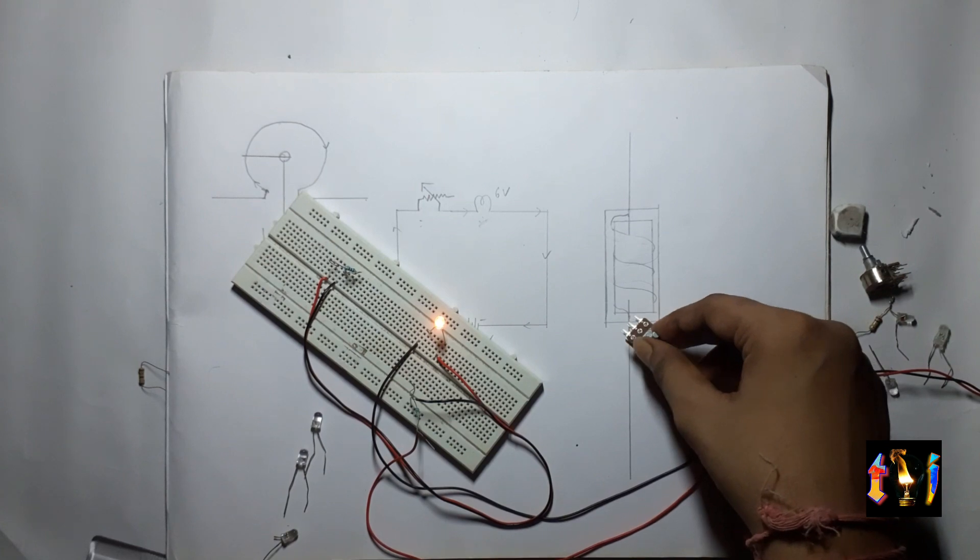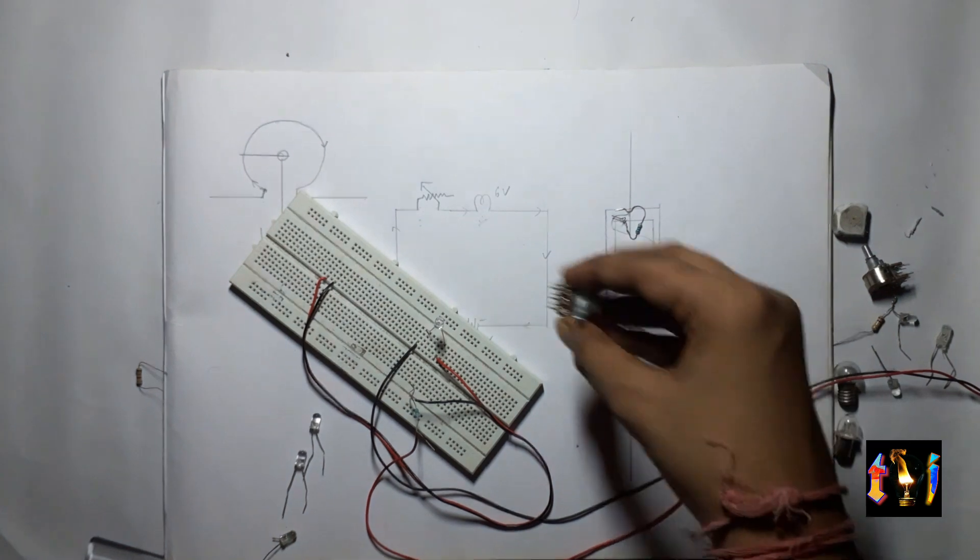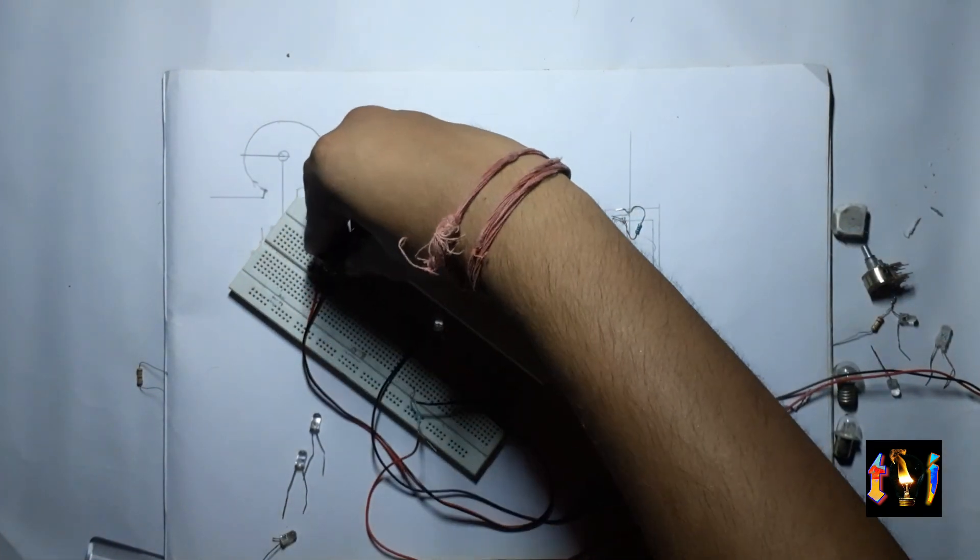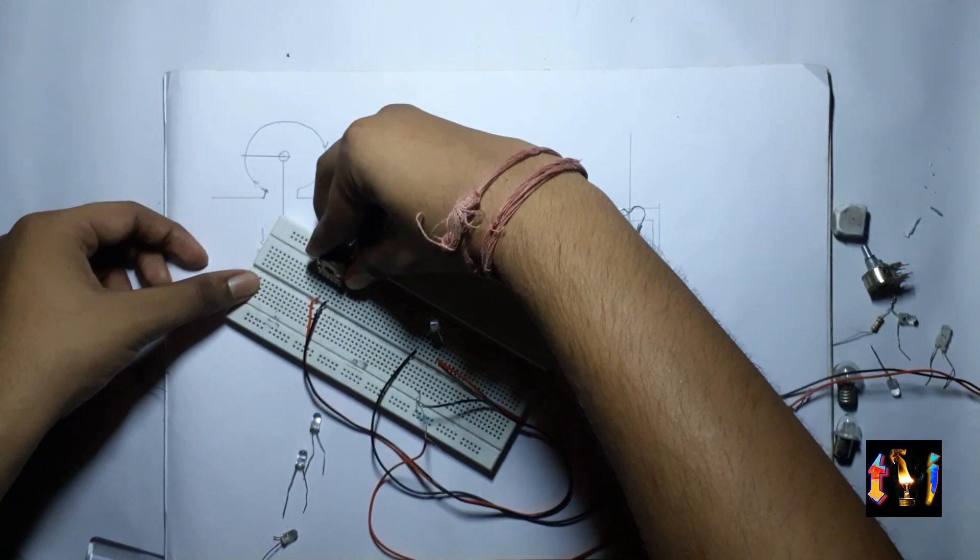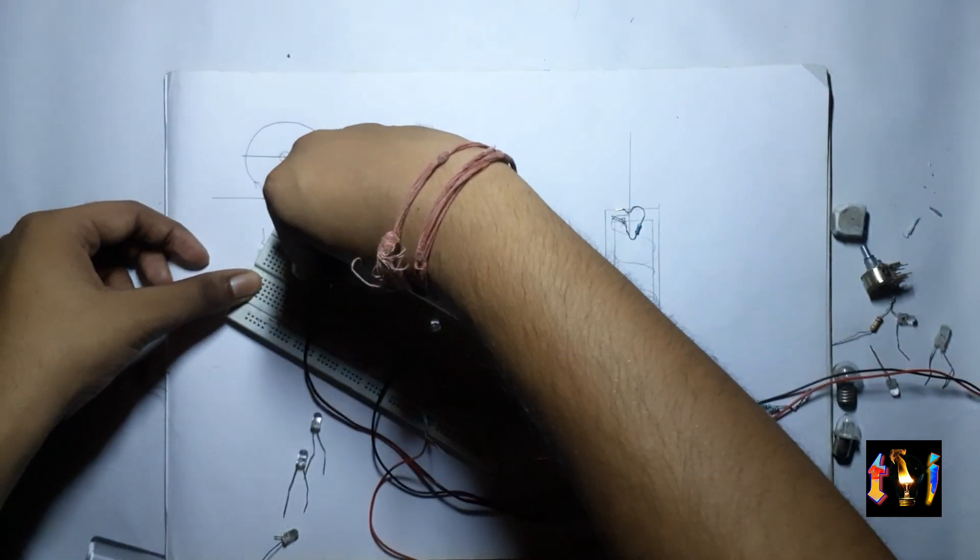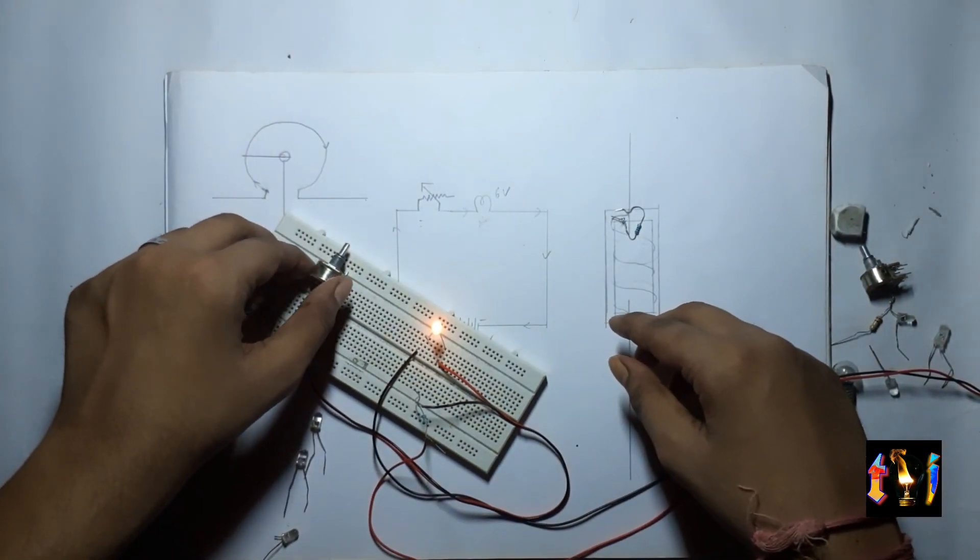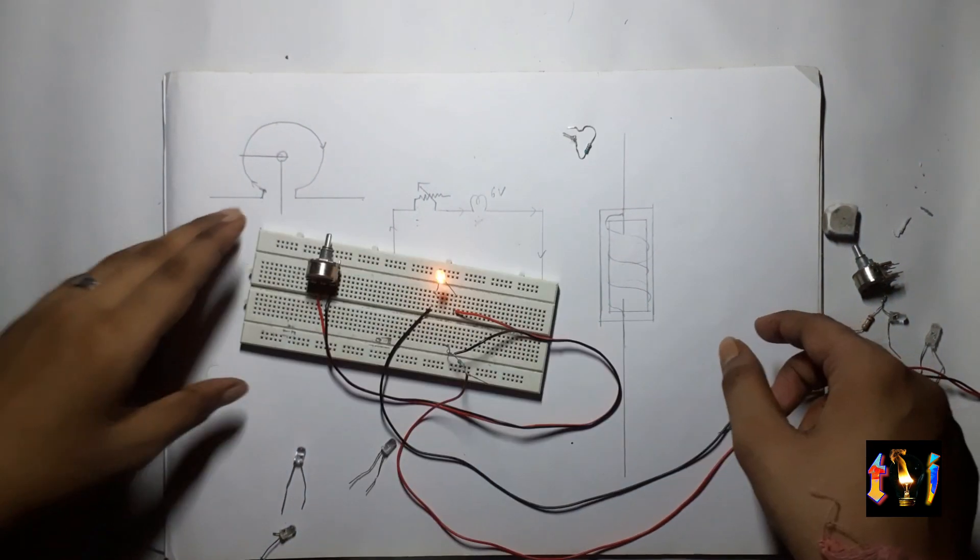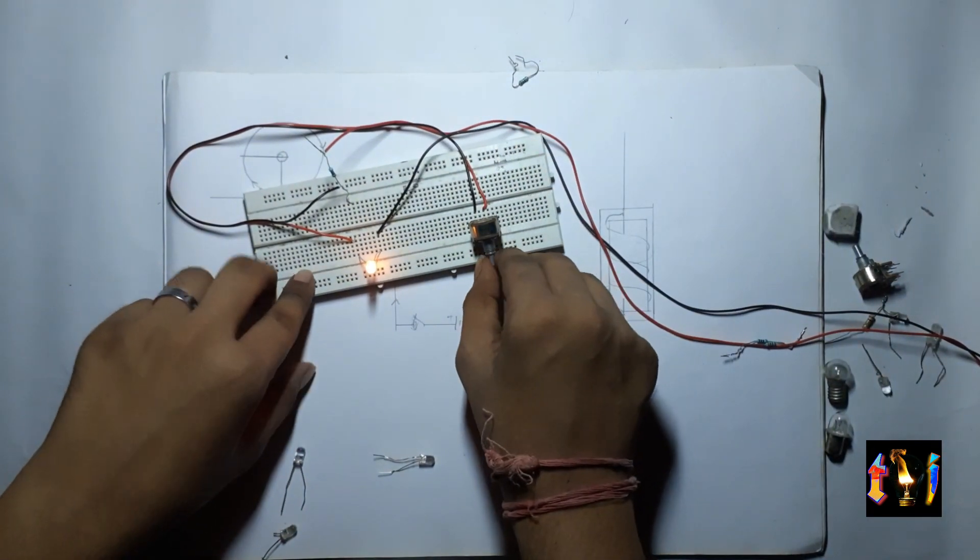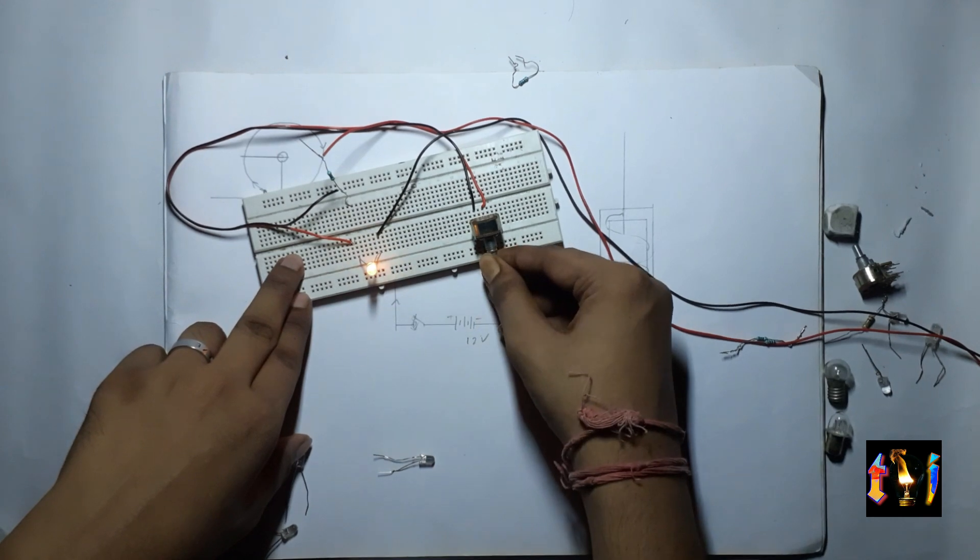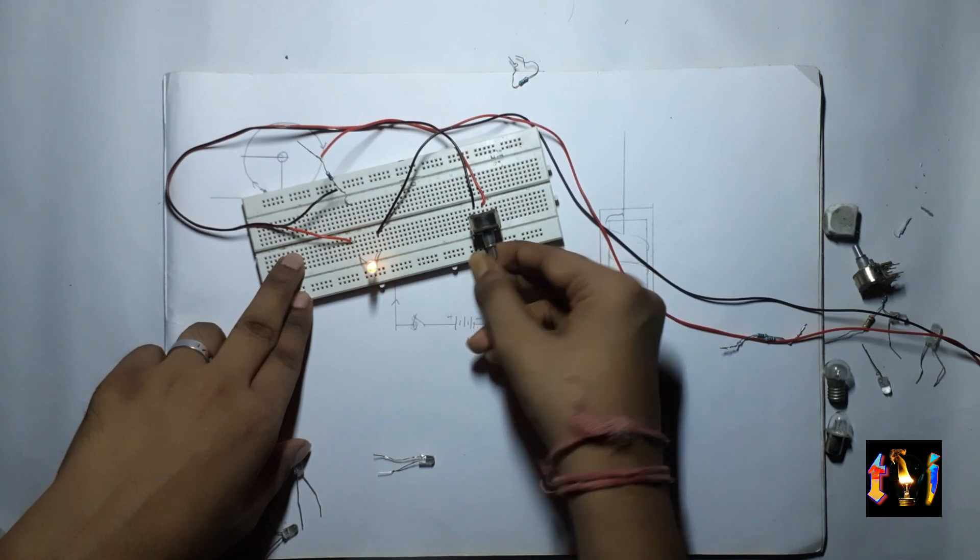Now let's try the variable resistor. So let's unhook it and plug it in and as you can see the LED lights up. So now I will try to dim the brightness of the LED by turning this knob and as you can see this works flawlessly.